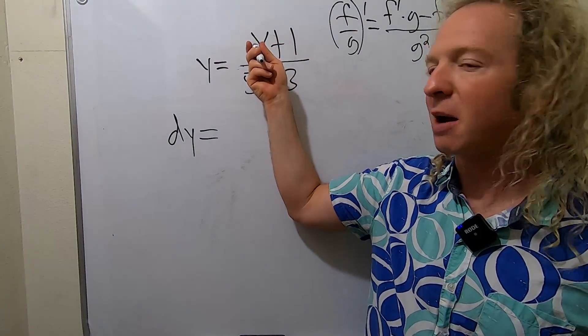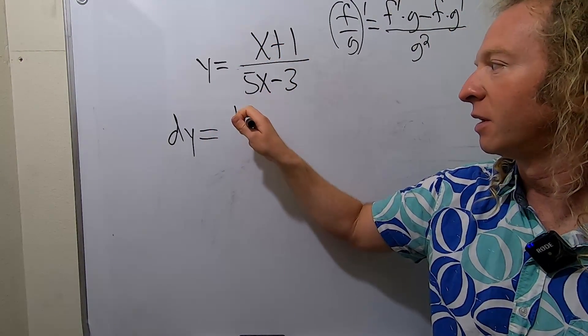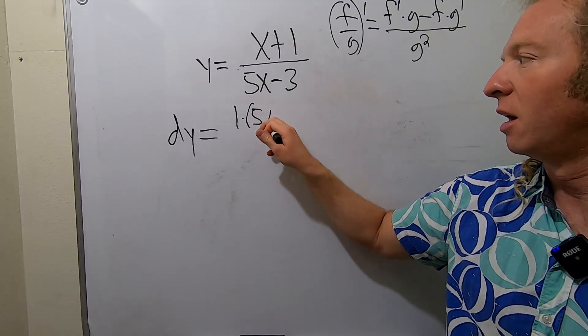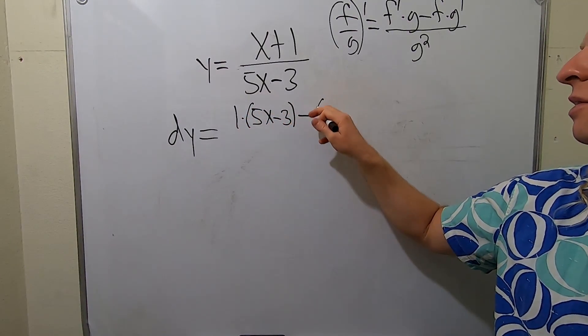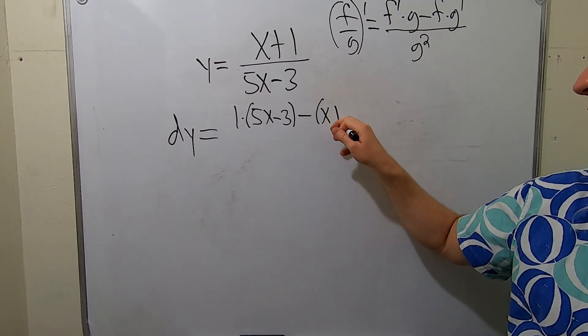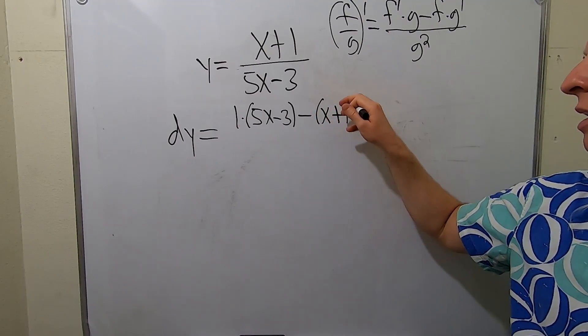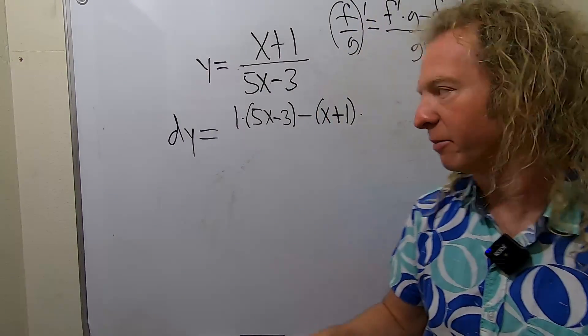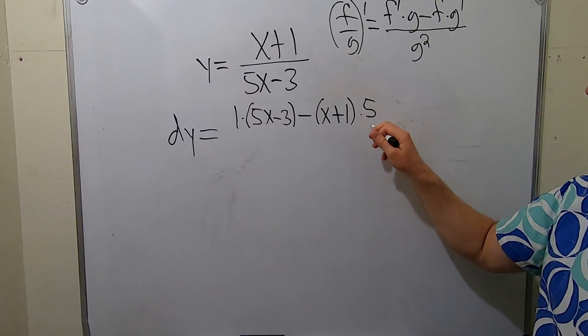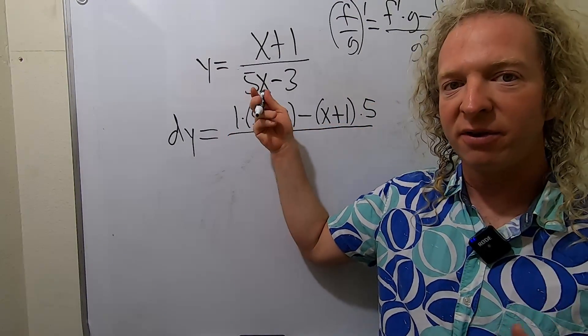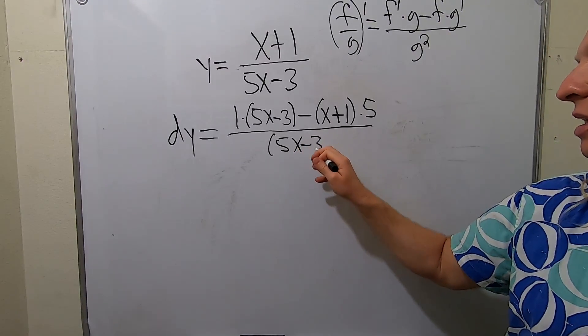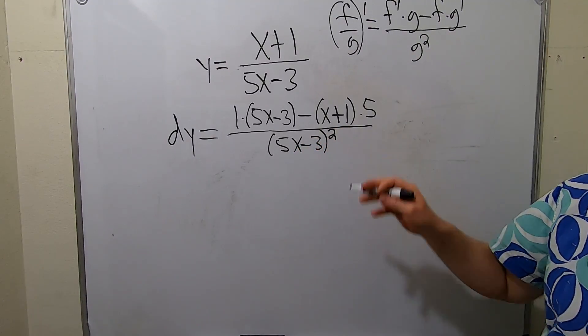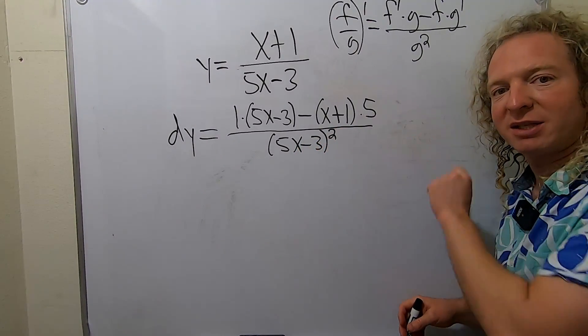The derivative of the top piece is just one, times the bottom piece, 5x minus 3, then minus the top piece, x plus 1, times the derivative of the bottom, which is 5. At the very bottom we have the bottom piece squared, so 5x minus 3 squared. And it's really important to put a little dx here at the end.